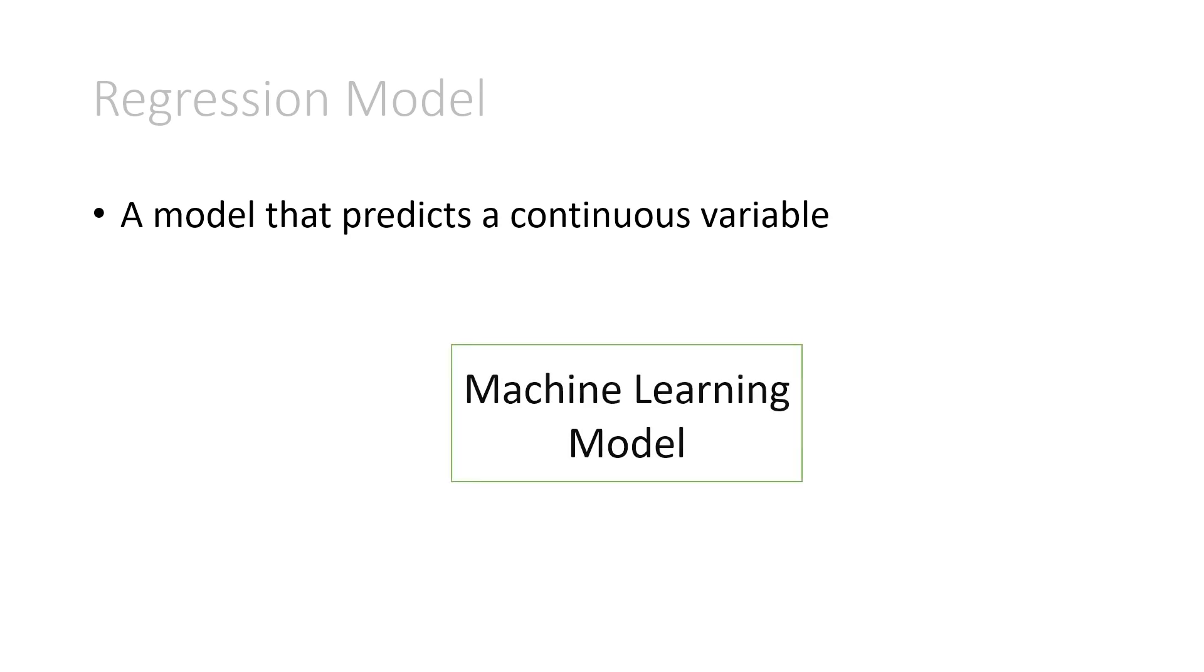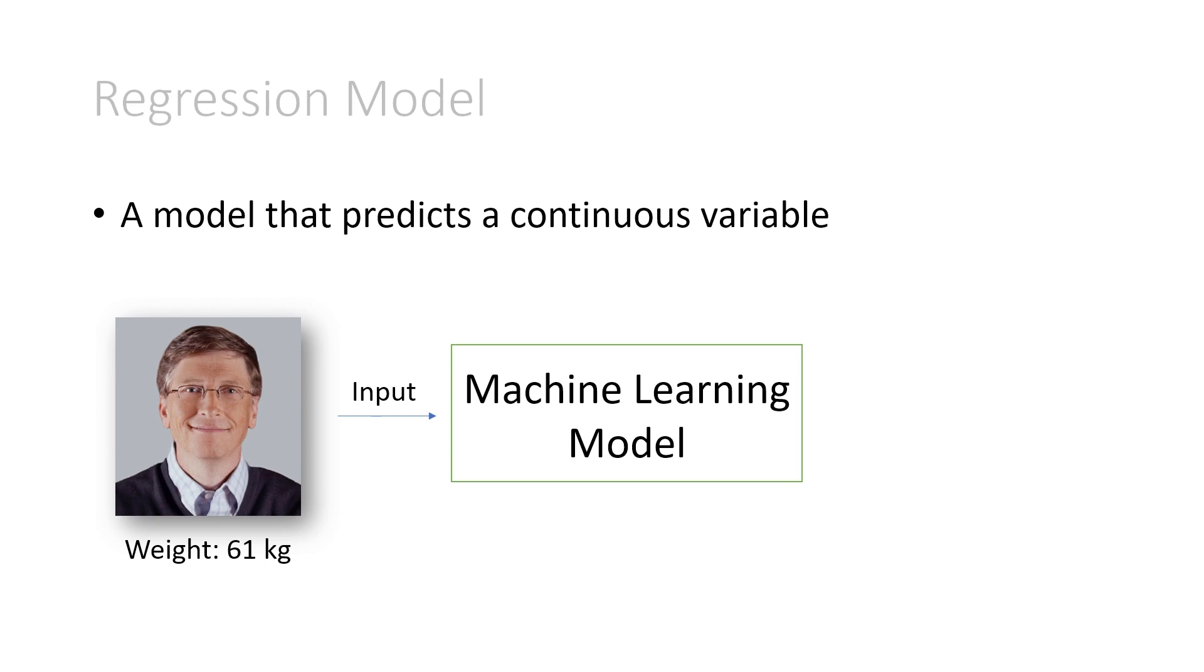So again, a regression model is a model that predicts a continuous variable. Here's an example. We have some machine learning model, which I'm just representing as a green box for now. It takes some input. So this one is not taking the image of Bill Gates here. It's taking his weight of 61 kilograms. So that's going to be the input to this model.